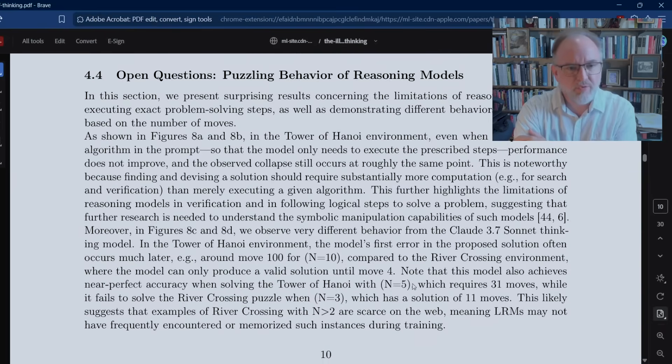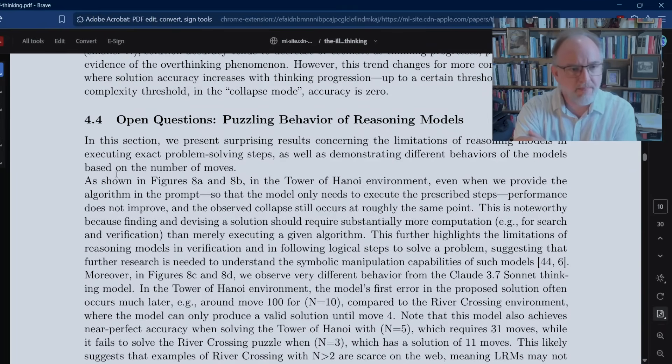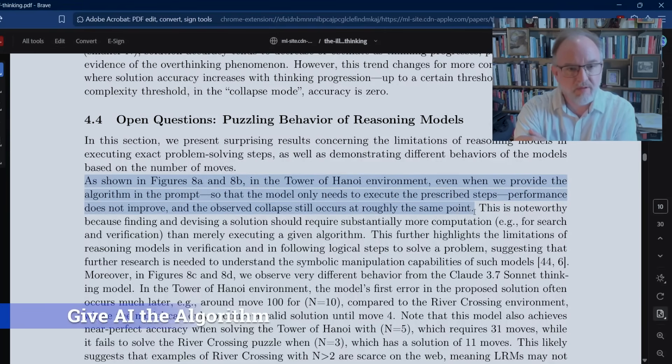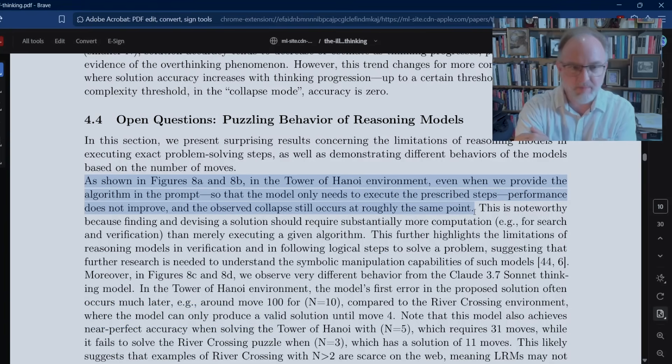Then the last thing I want to point out here in section 4.4, this is, to me, the most mind-blowing result of this paper. In the Tower of Hanoi environment, even when we provide the algorithm in the prompt so that the model only needs to execute the prescribed steps, performance does not improve, and the observed collapse still occurs at roughly the same point. This is fascinating to me. Even when you give it, in its prompting, the algorithm to follow, it doesn't follow the algorithm. It works in its own way and arrives at the same kind of accuracy collapse around n equals 8 disks for Tower of Hanoi.